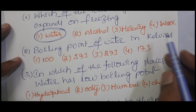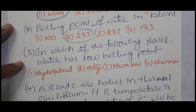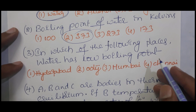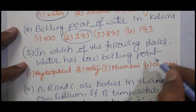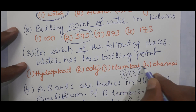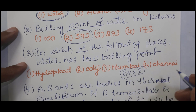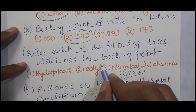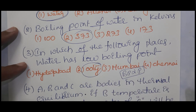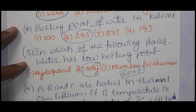Next: boiling point of water in Kelvin. You know the boiling point of water is 100 degrees Celsius. In Kelvin, that is 100 + 273 = 373 K. In which of the following places does water have a low boiling point? The boiling point of water is directly proportional to pressure. When pressure decreases, boiling point decreases. At high altitudes, atmospheric pressure is lower, so boiling point of water is lower.